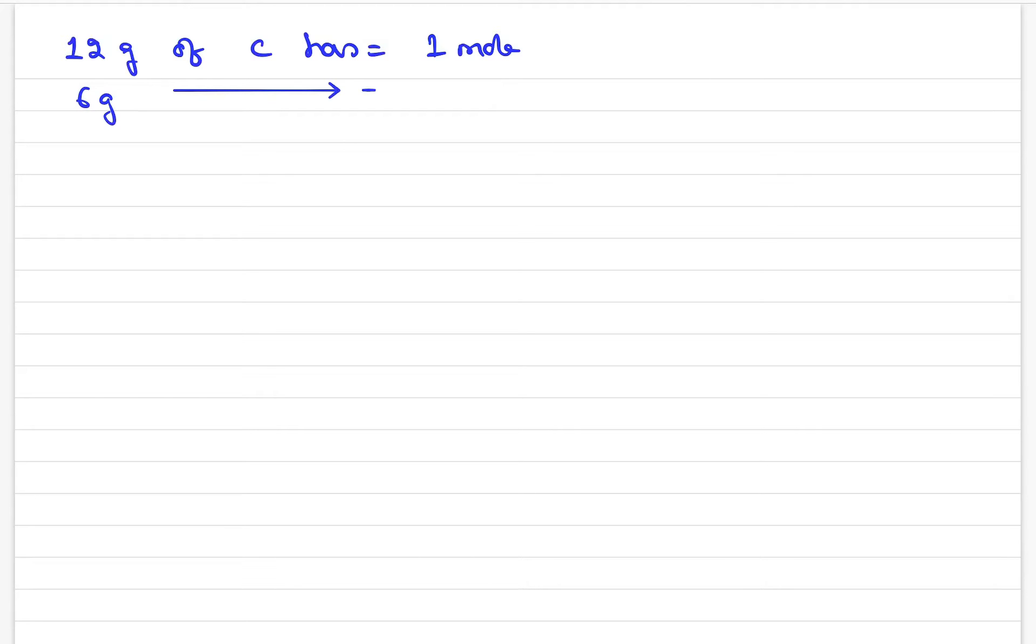6 grams of carbon has 1/12 × 6 = 1/2. Same way if you ask 2.3 gram of sodium has mole.